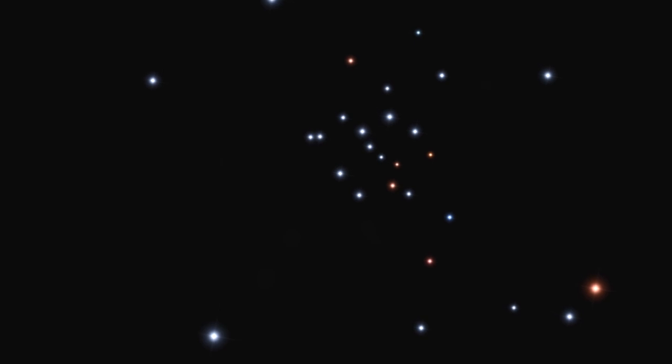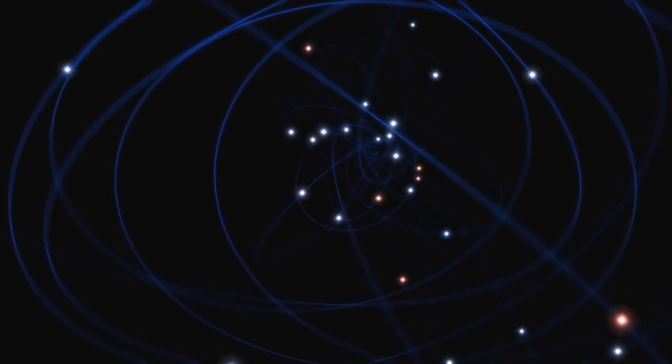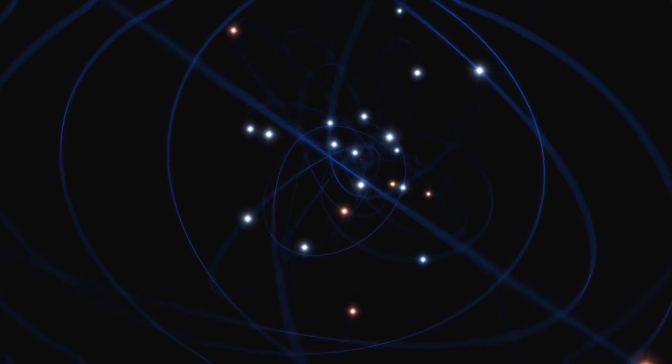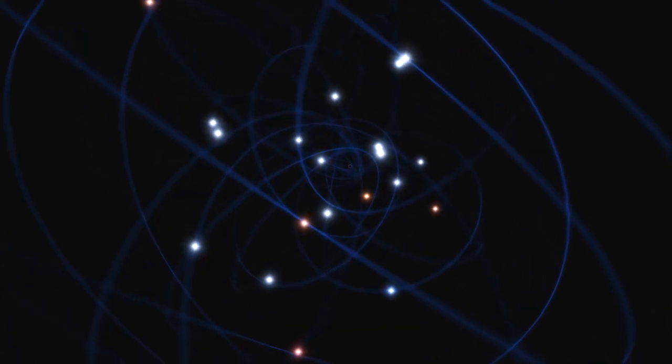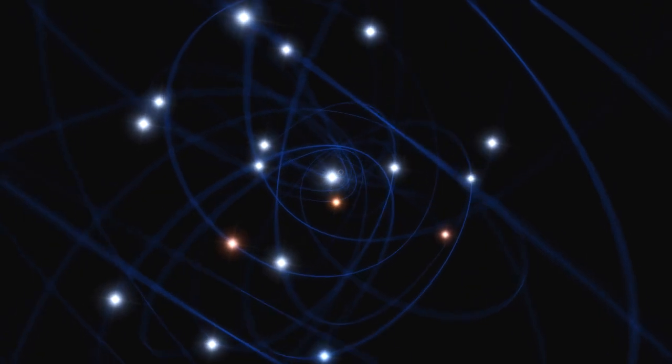So what this team did was that at various points of the past 16 years, they kept taking images of the very central region of the Milky Way. Now from these images, they were able to map out the motions of a total of 28 stars. Now what these motions showed was that these stars aren't just moving about randomly, but that they are clearly orbiting a very massive central object. And the point is that this central object is completely unseen.